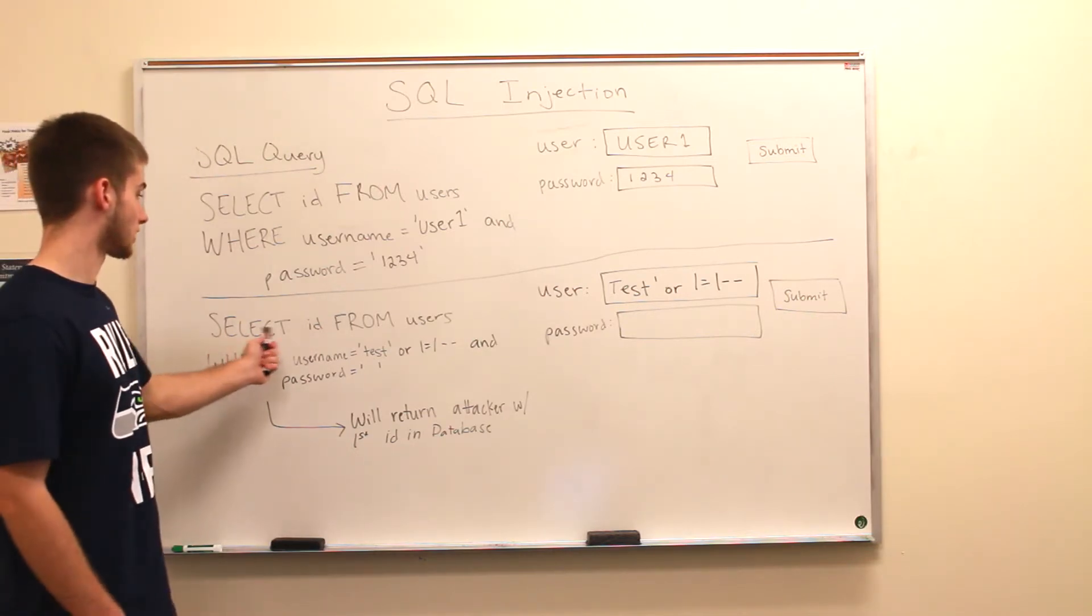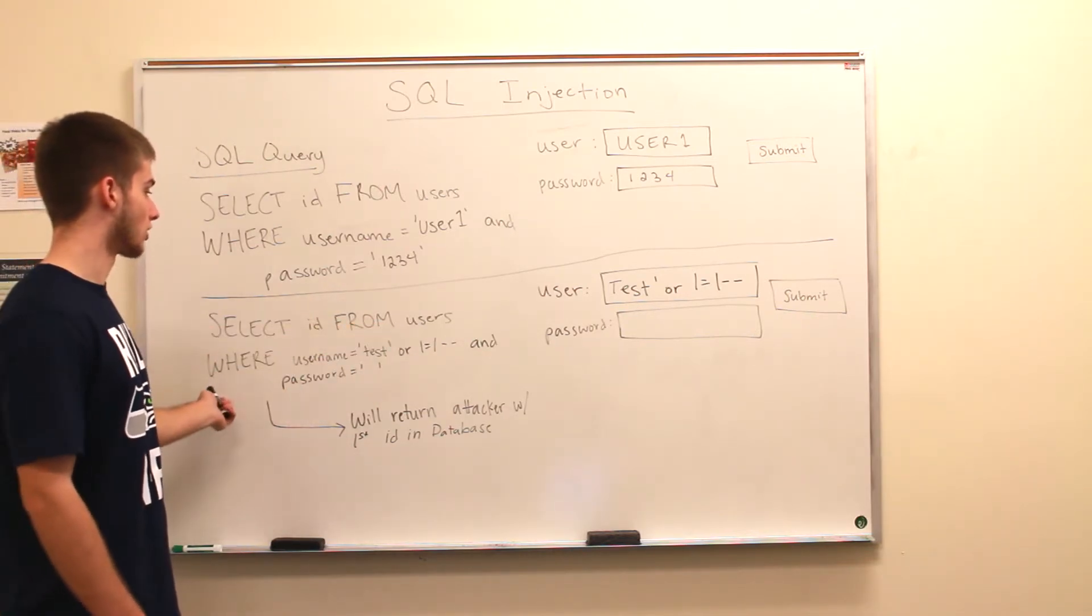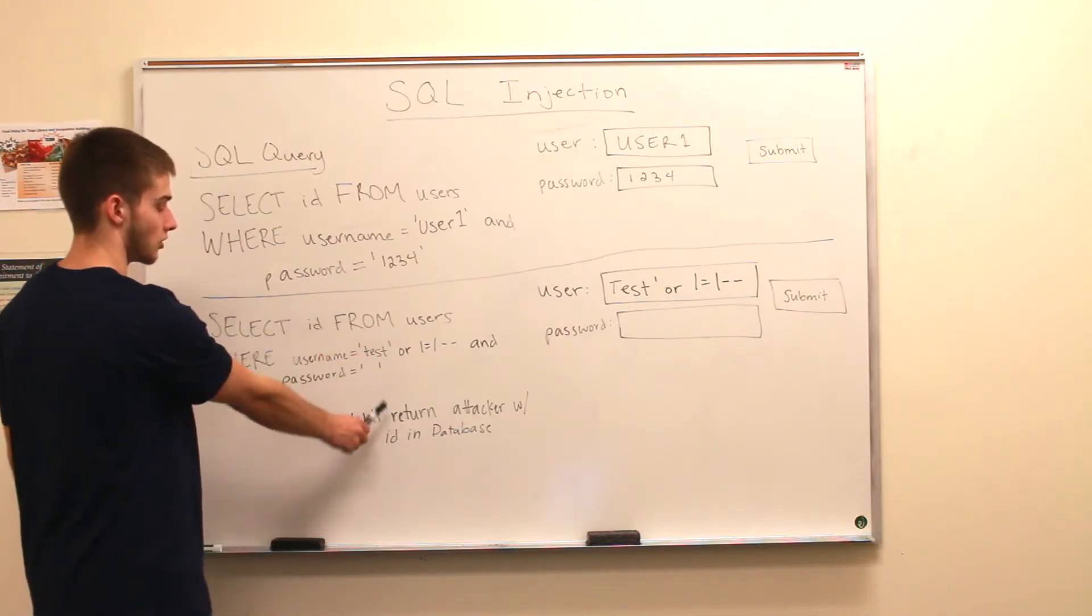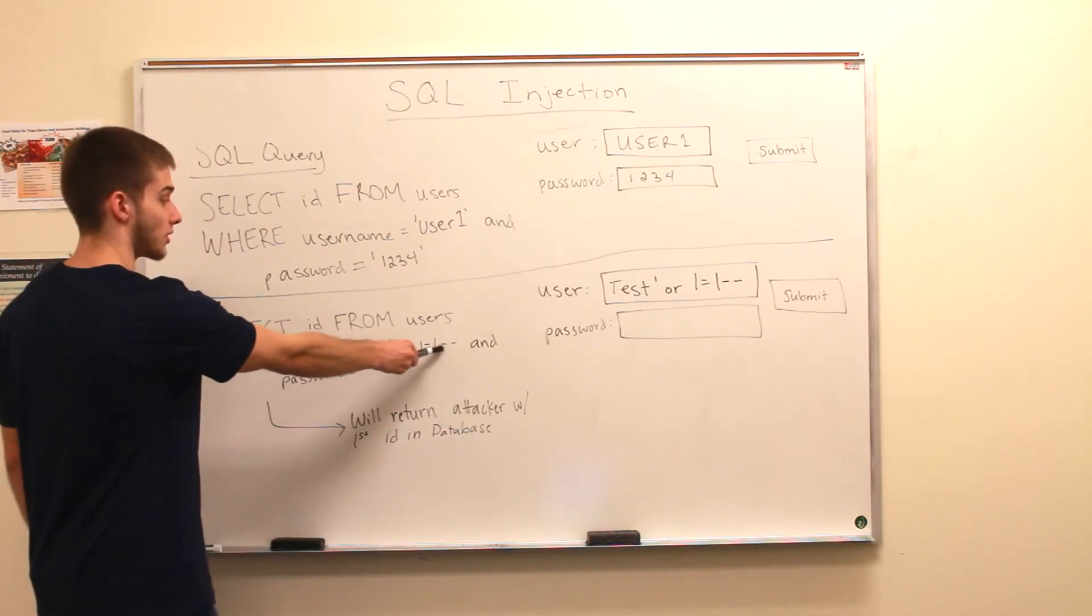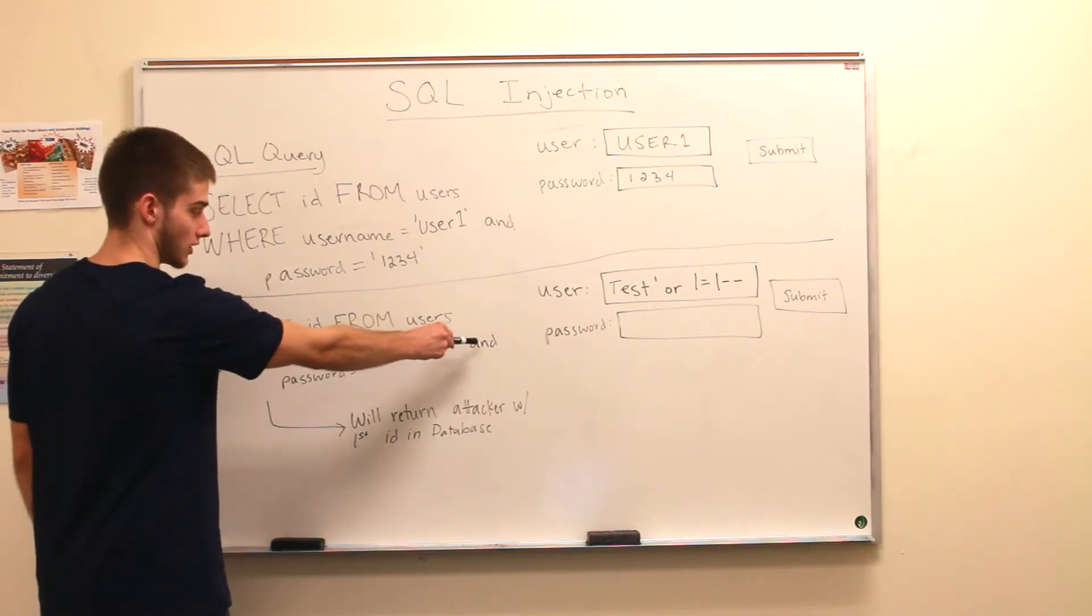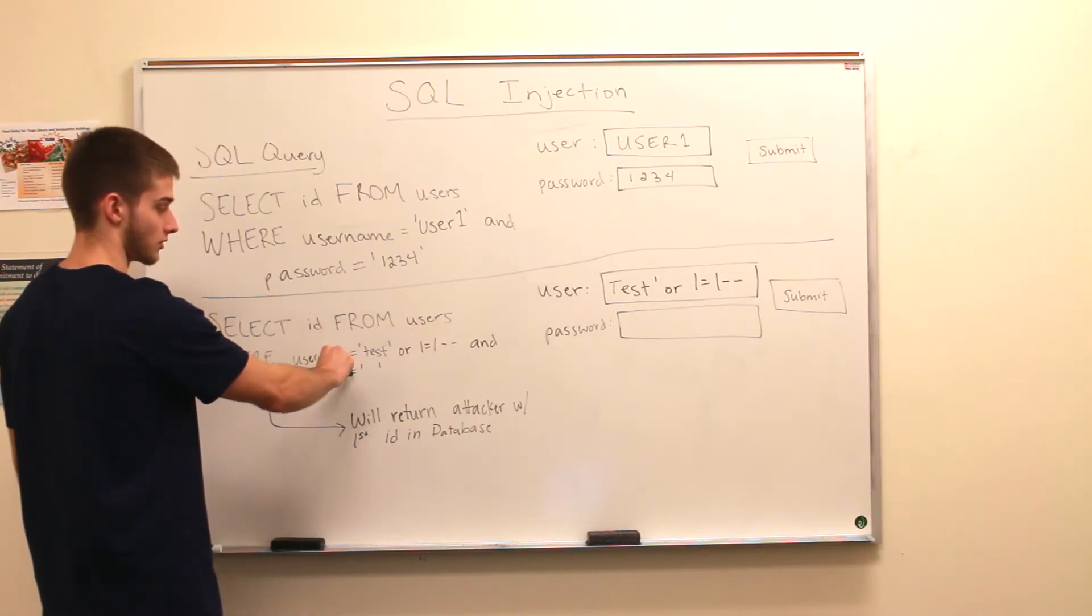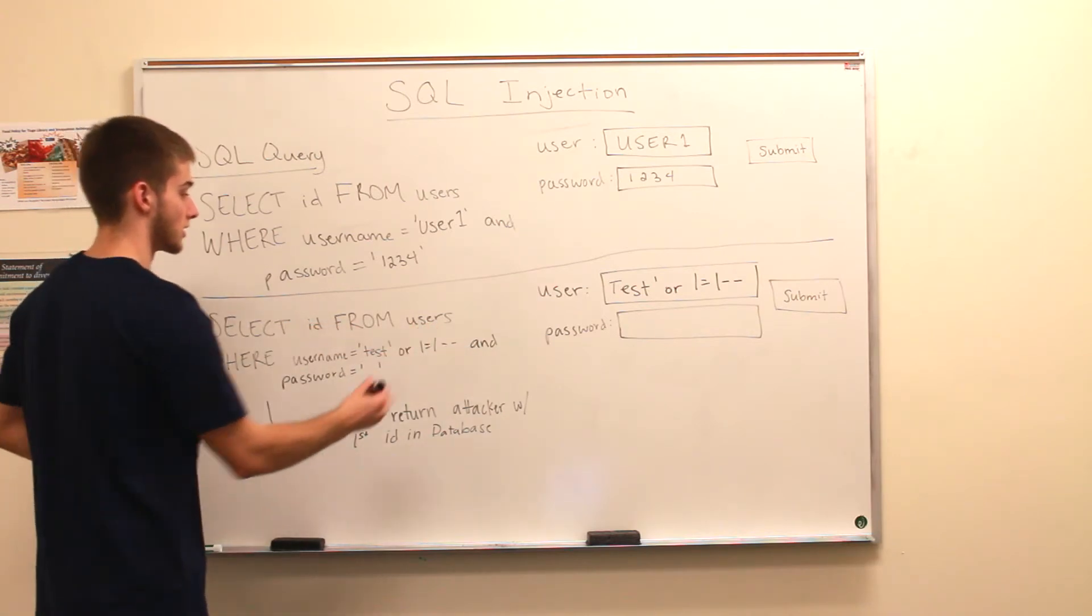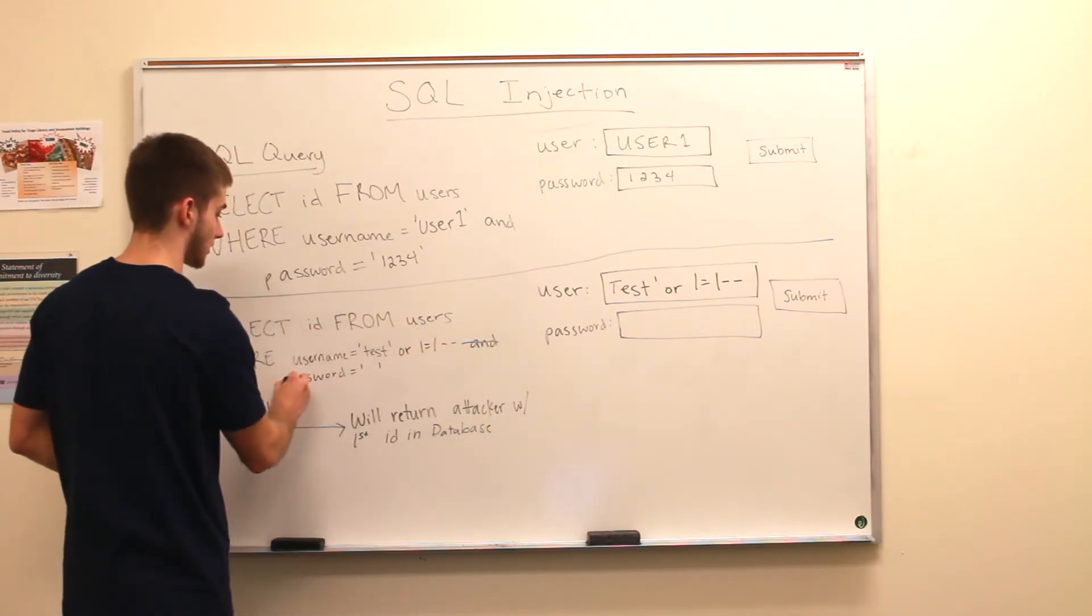This query will select an ID from users where username equals test or 1 equals 1. This is always going to return true because the second part, and password equals what, is commented out. Essentially this will not exist at that point.